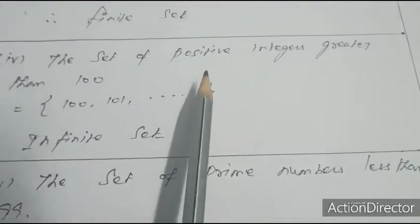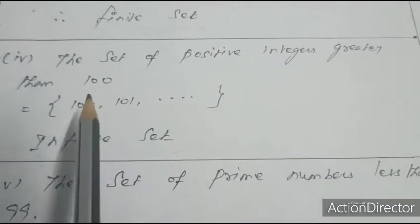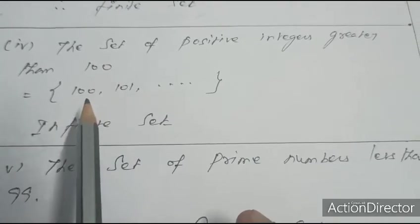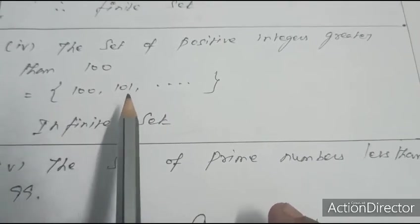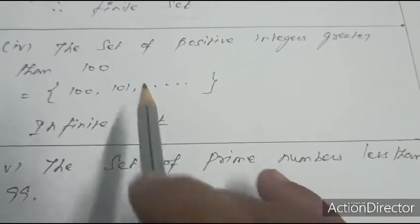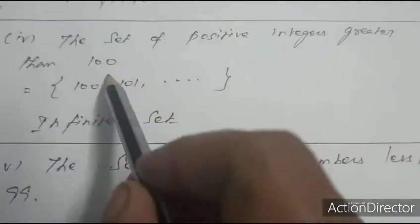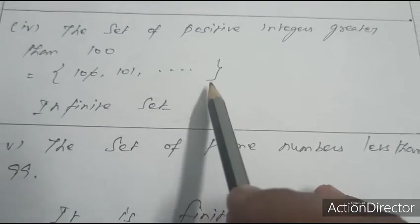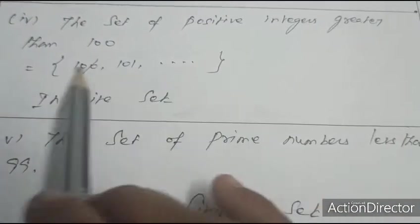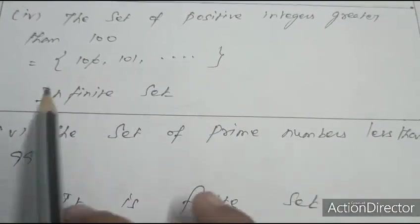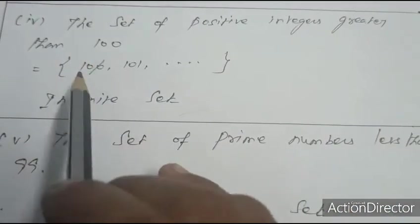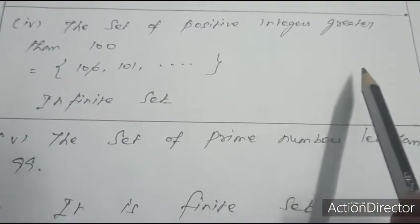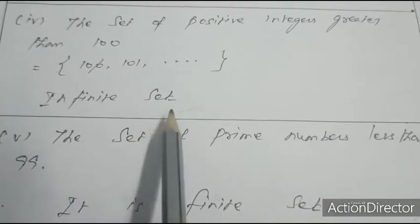Fourth question: the set of positive integers greater than 100. Greater than 100 means 101, 102, 103, etc. — it goes on forever. Therefore it is an infinite set. Note: greater than or equal to 100 would include 100, but greater than 100 starts from 101, 102, etc., so it is an infinite set.